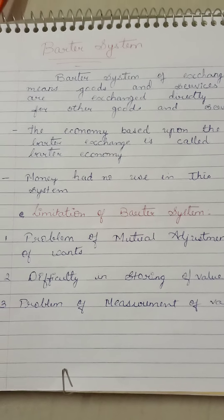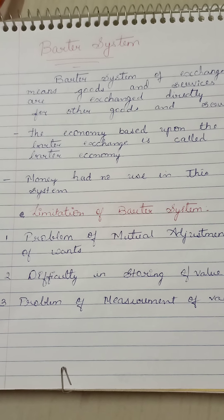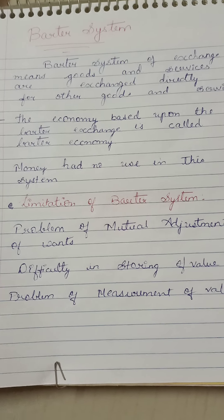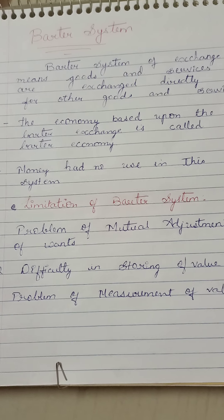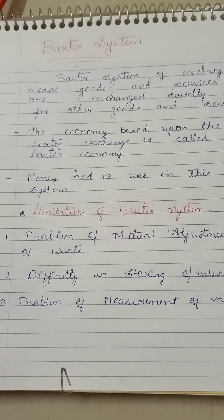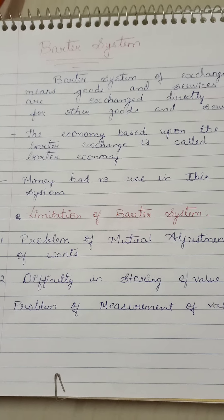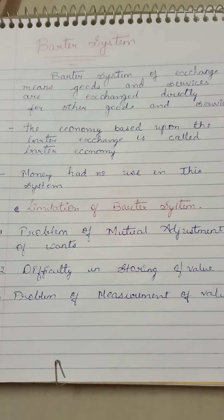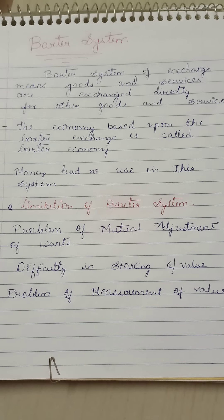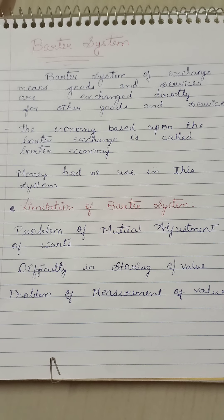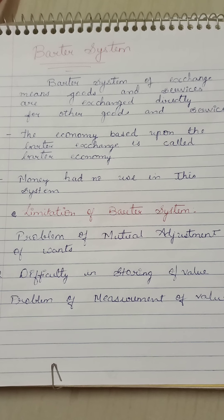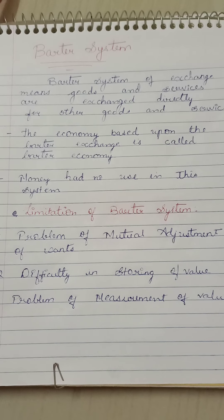Due to limitations such as double coincidence of wants, lack of satisfactory means of storing value, and the problem of measuring value, along with industrialization, there arose a need for the modern economy — and money became the main means of exchange. The barter system could not exist because of unlimited wants, and thus the need for money as a means of exchange arose. Today we covered these points, and the next related topics will continue in the next session. The limitation of the barter system is very important and is already asked in board exam papers for three marks — so be prepared. Thank you.